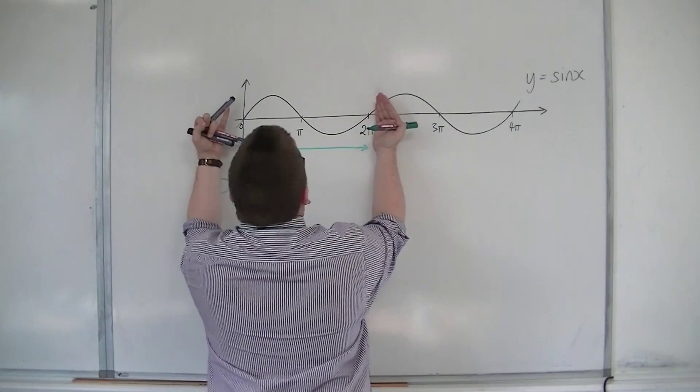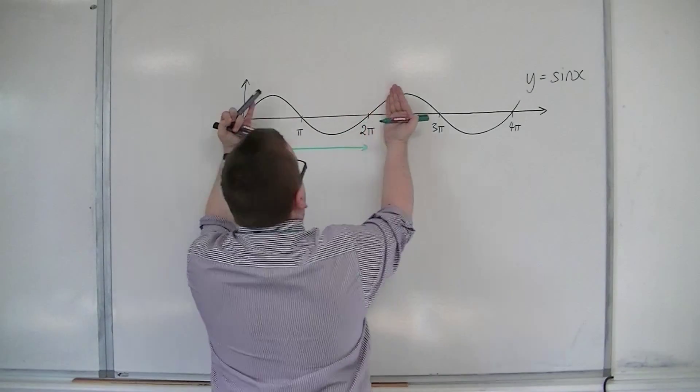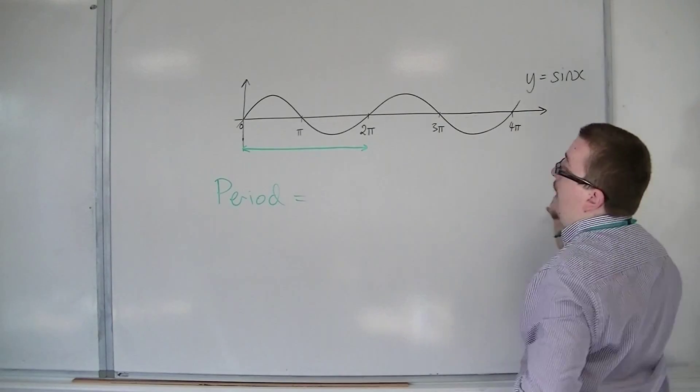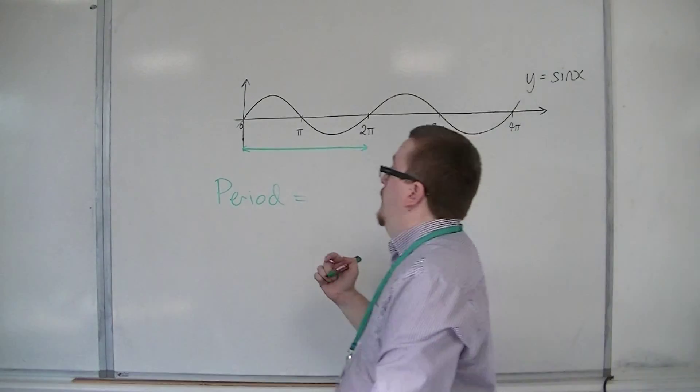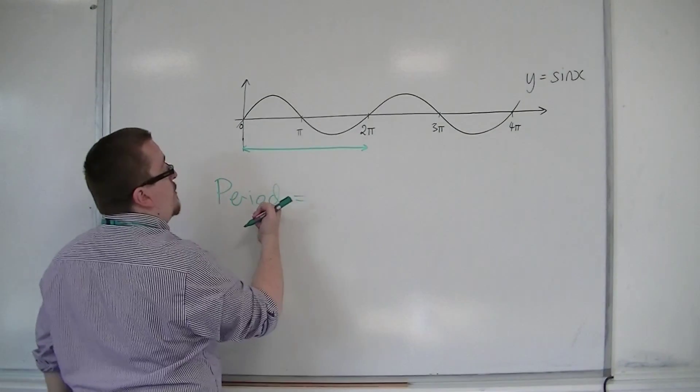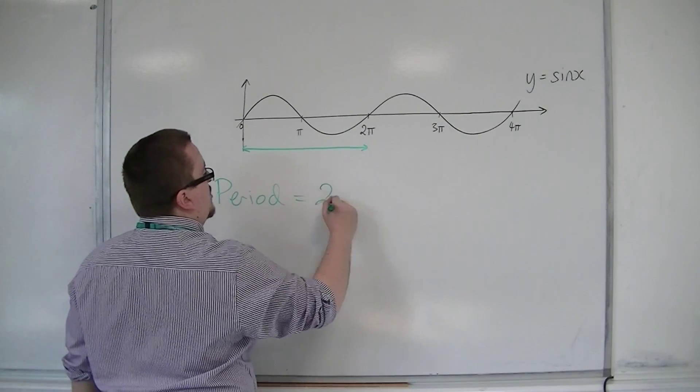That part of the curve is repeating itself over and over again in either direction. So the period of sin x is 2π.